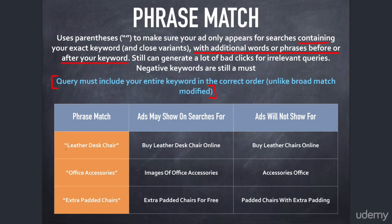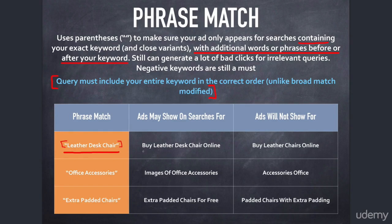Now let's take a look at some examples. In example one, the keyword in my account is "leather desk chair" — it's a phrase match keyword because it's enclosed in parentheses. Your ad might show for "buy leather desk chair online" because "leather desk chair" is contained in the query in the correct order, with "buy" prepended and "online" appended. That's totally fine.